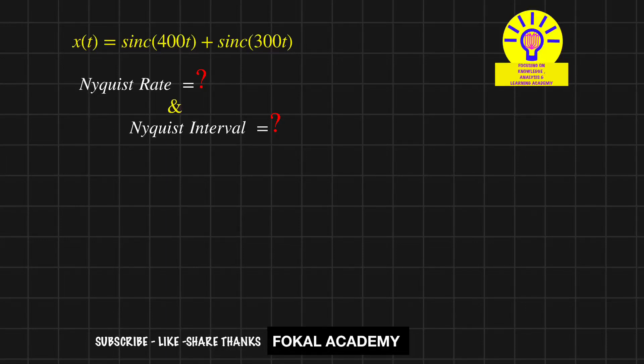Hi dear one, welcome to FOKAL Academy. Seeing this problem, here one signal is given in terms of sinc function. That is x(t) = sinc(400t) + sinc(300t). For this signal, how can you find the Nyquist rate and Nyquist interval?